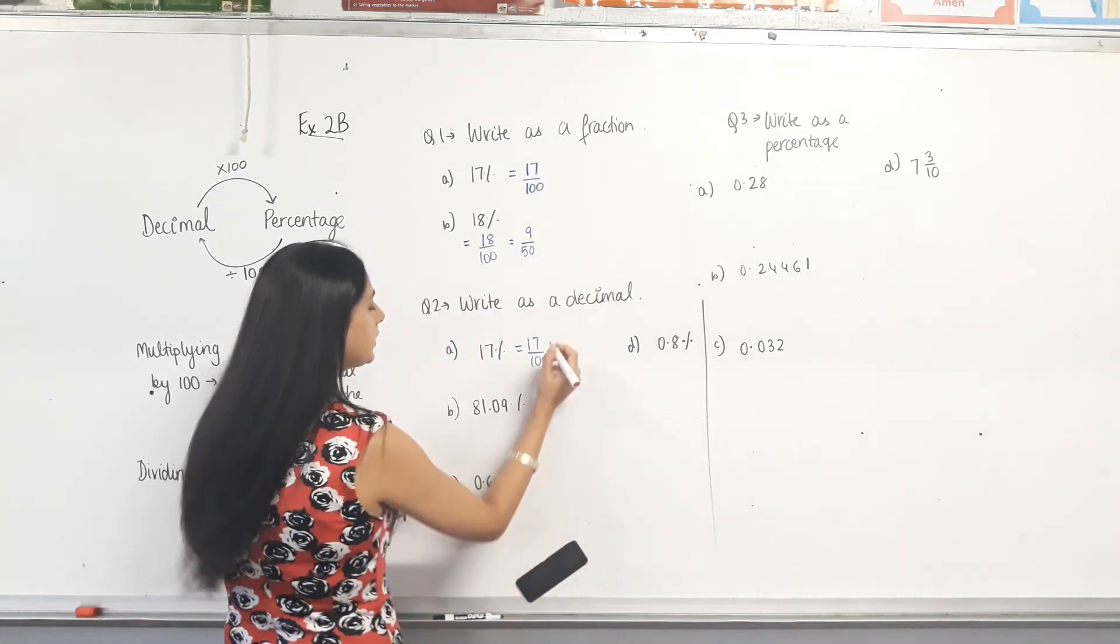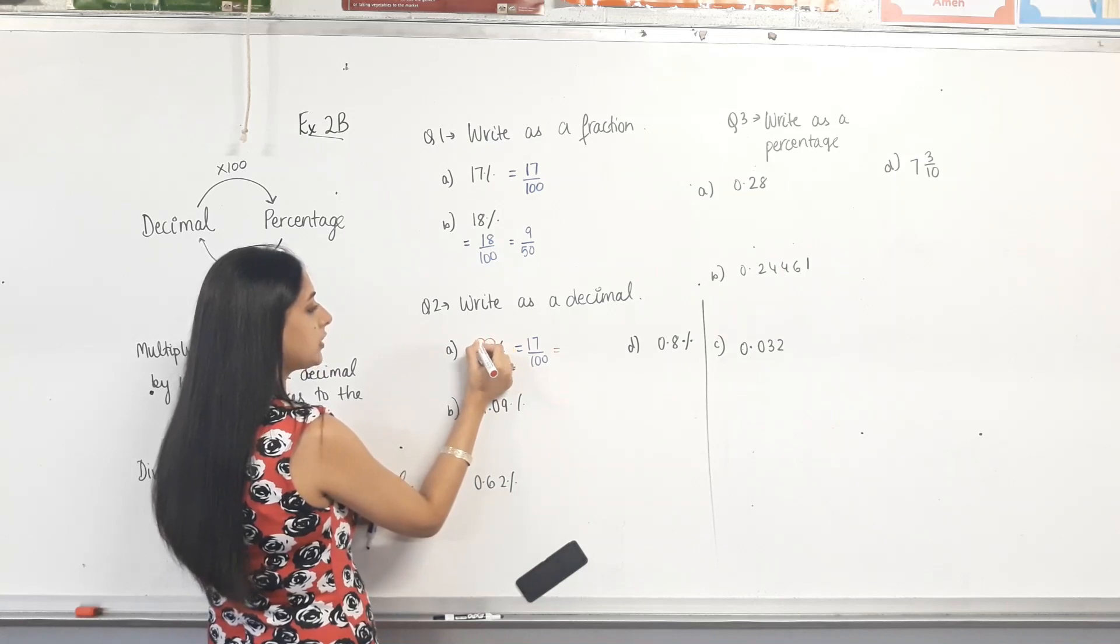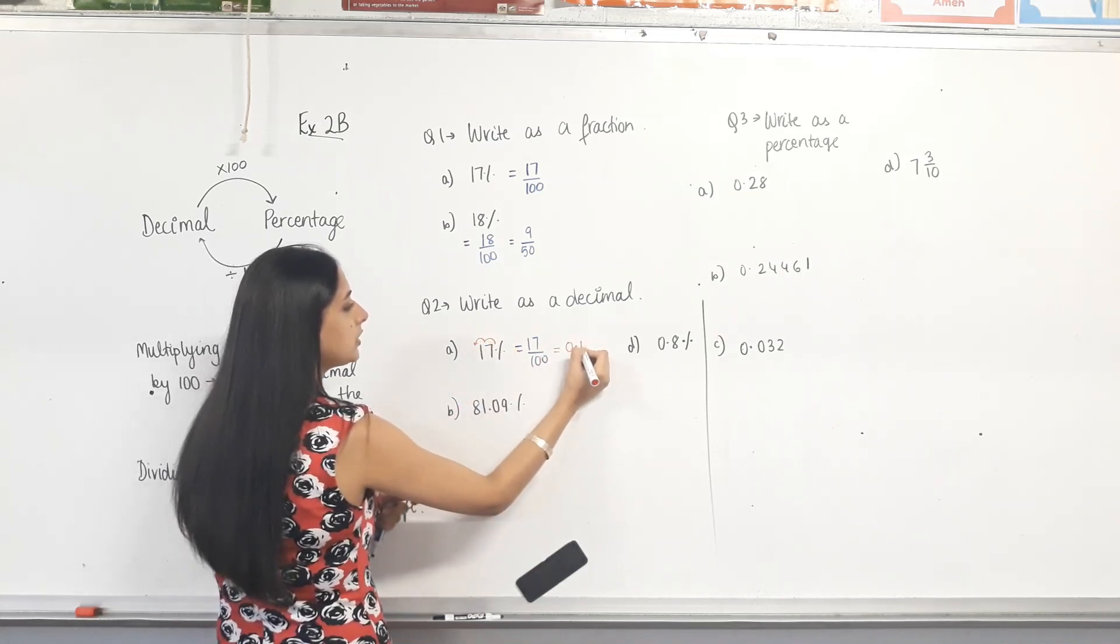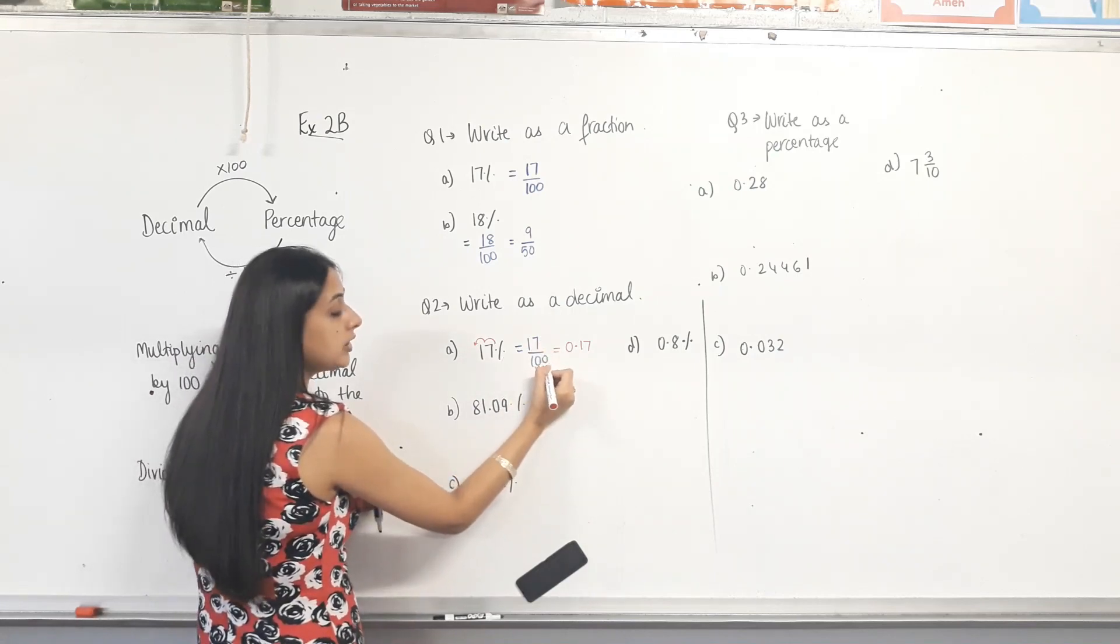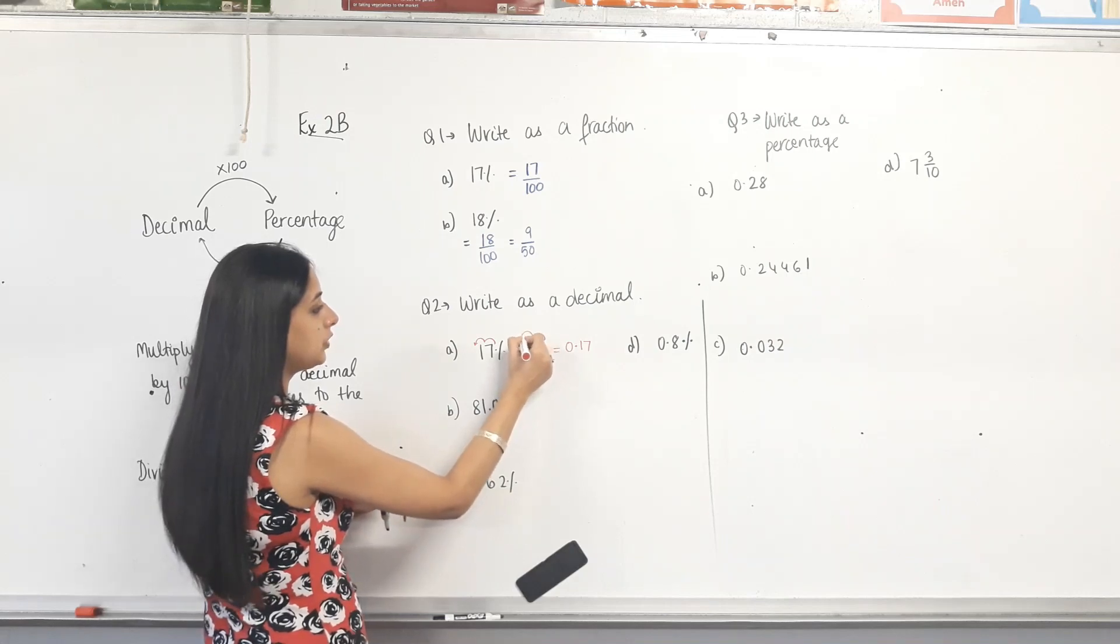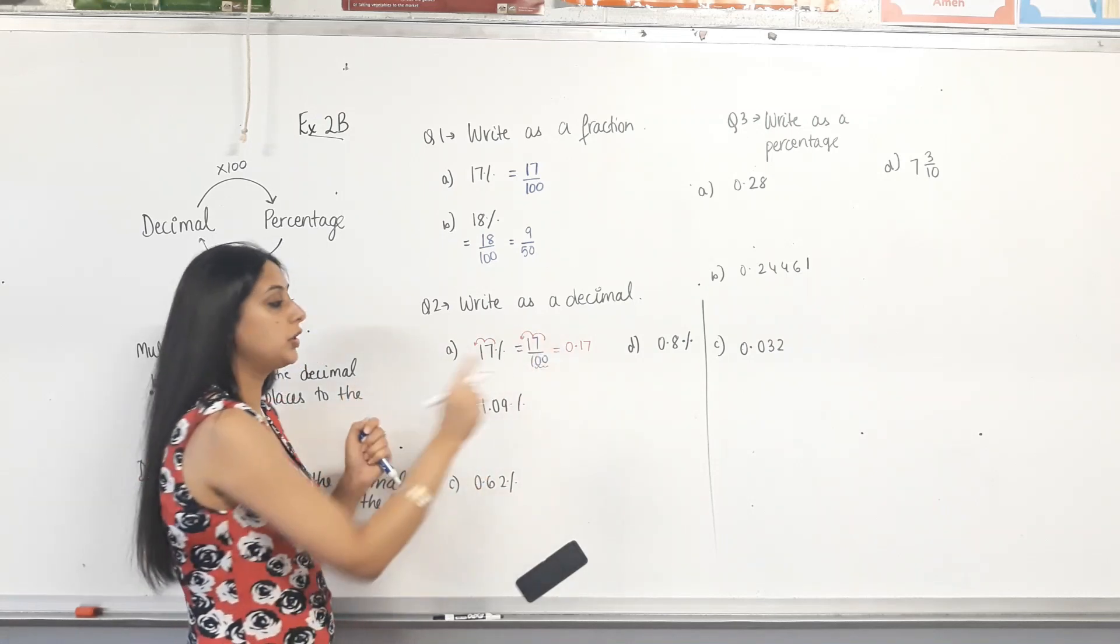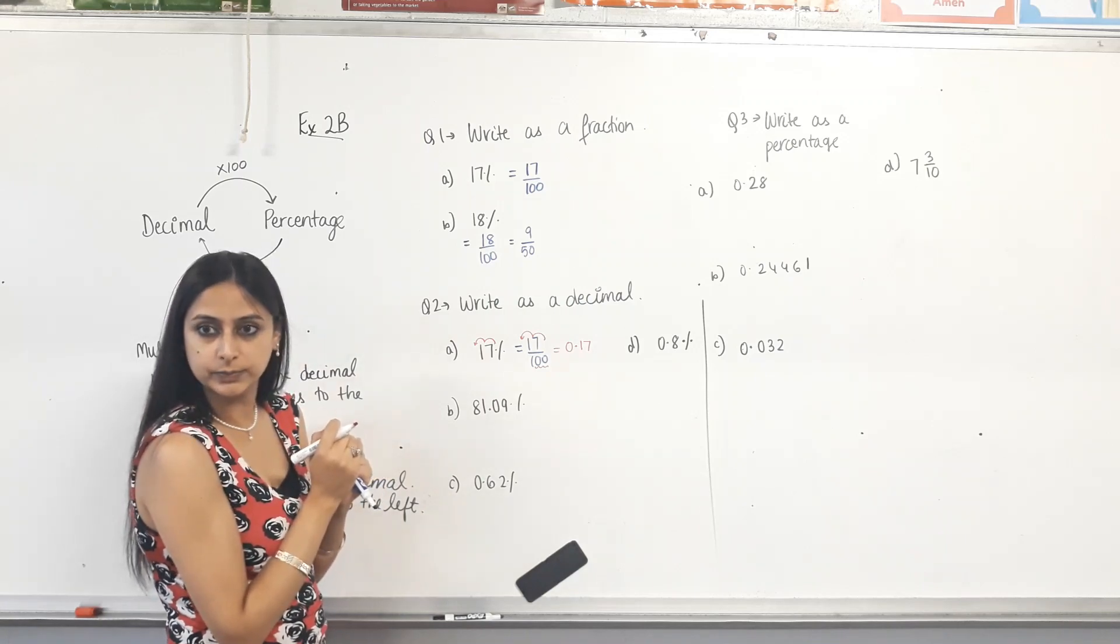Now, so here's the decimal. So we'll move it two places to the left. What do we get? 0.17. And isn't that right anyways? Because it's 17 over 100. How many zeros? 2. How many decimal places? 2. So 1, 2. So you can skip this step and write 0.17 if it's a one mark question.